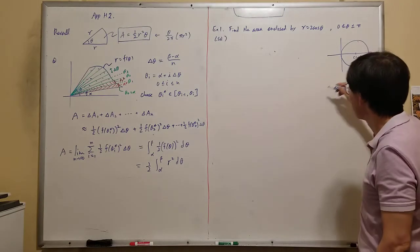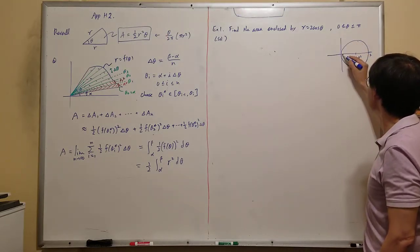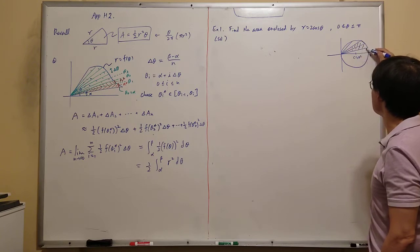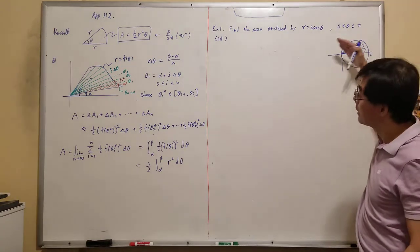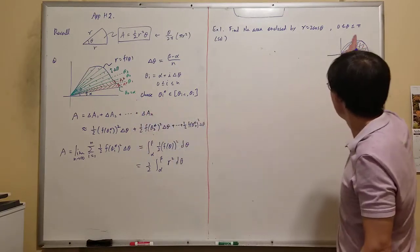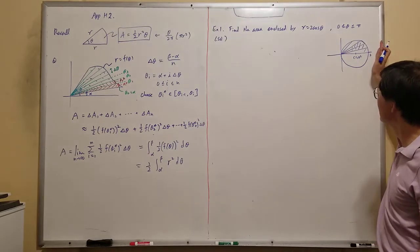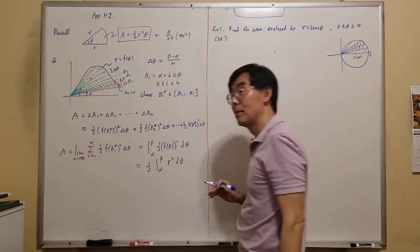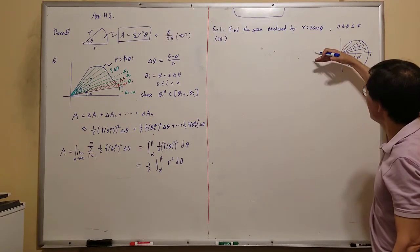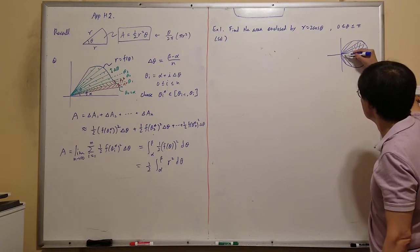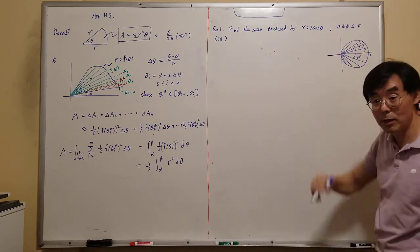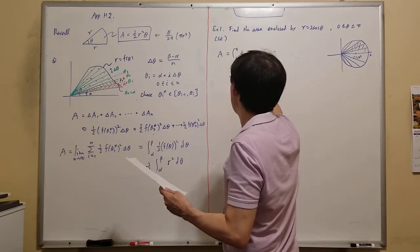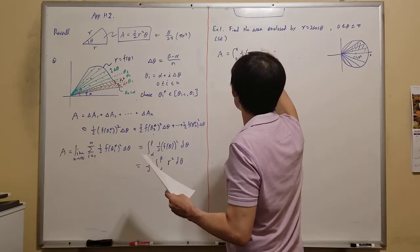As theta goes from 0 to π/2, that covers the upper semicircle, and from π/2 to π it traces the lower part — both inside the same curve r = 2cosθ. So the area is: A = ∫₀^π one half (2cosθ)² dθ. When you have cosine squared, you use the power reduction formula: cos²θ = (1 + cos2θ)/2.